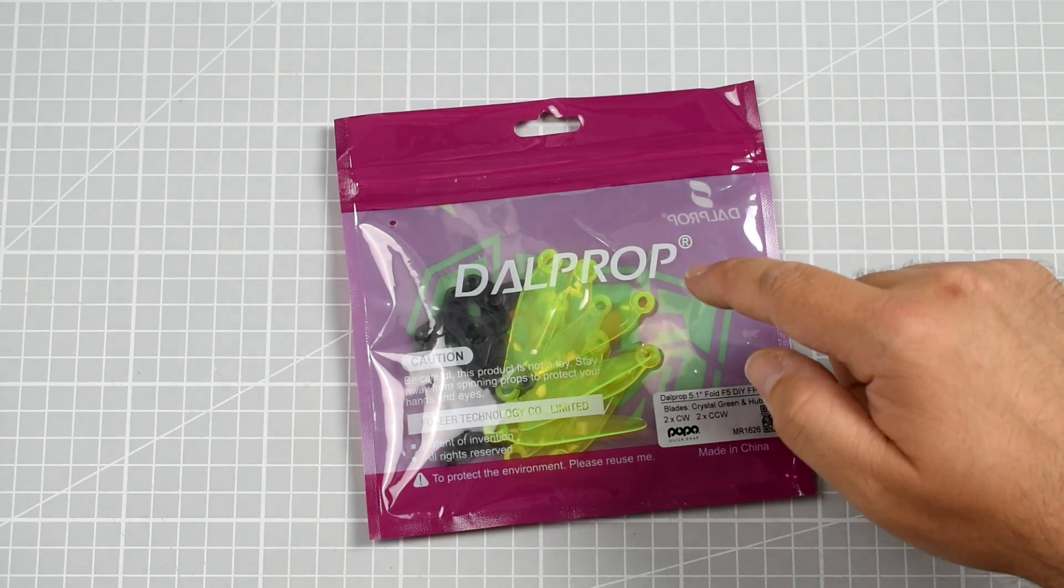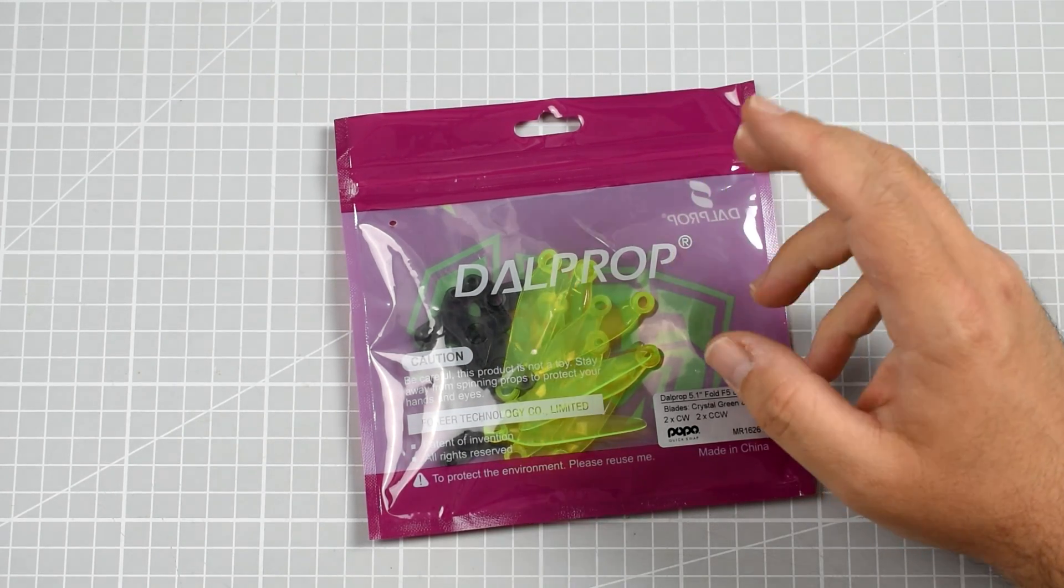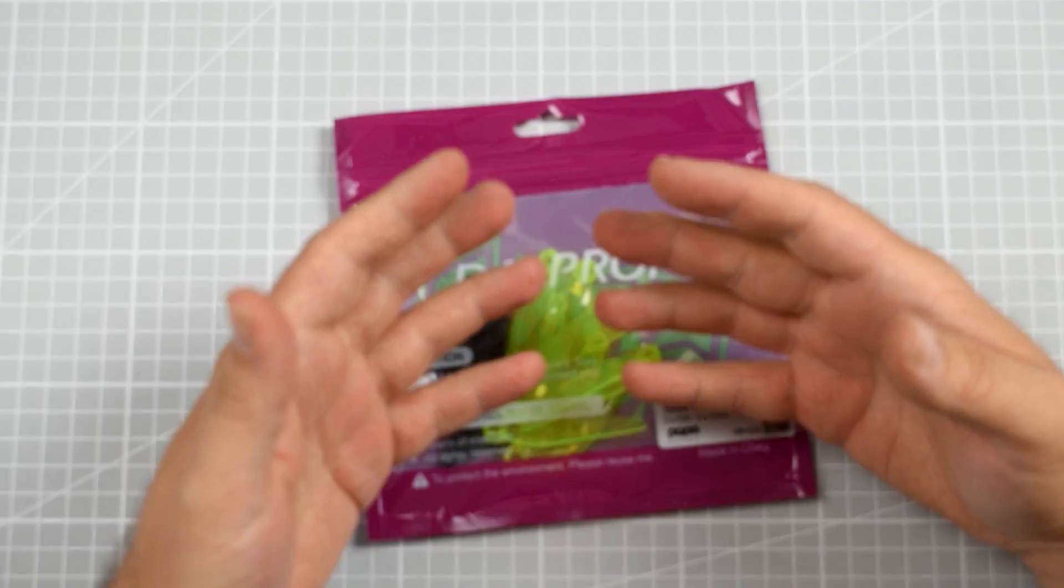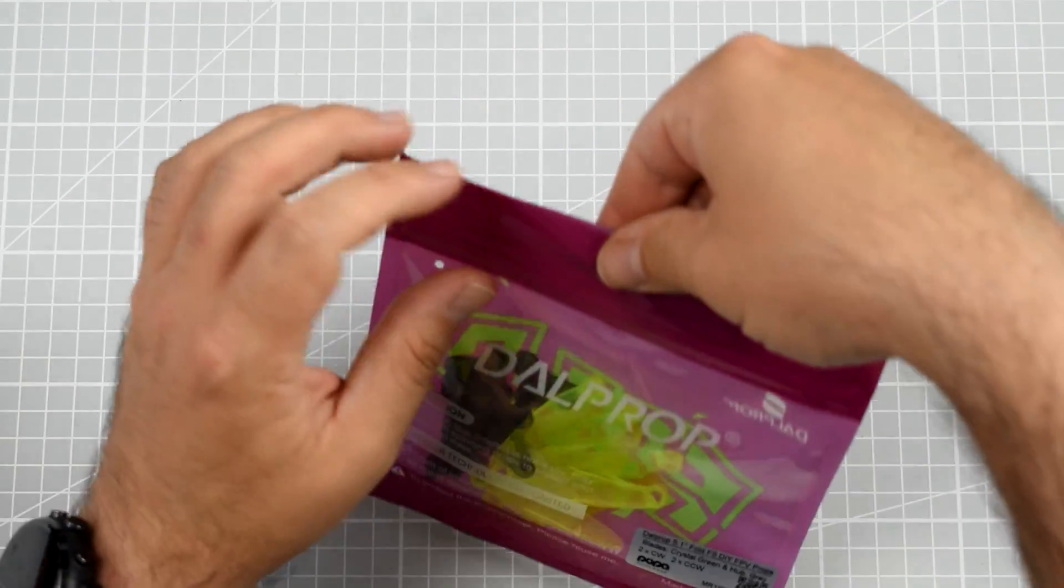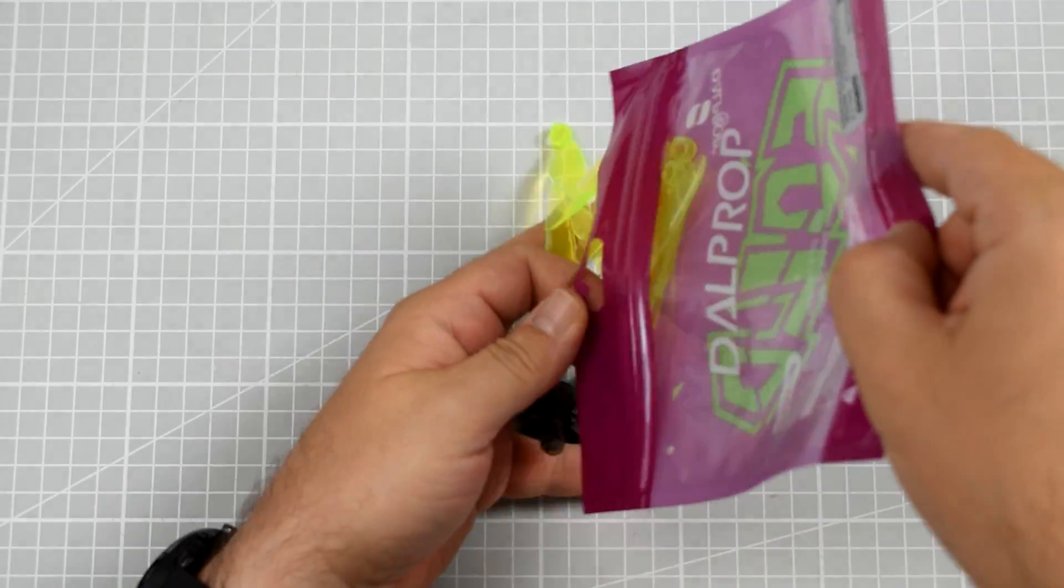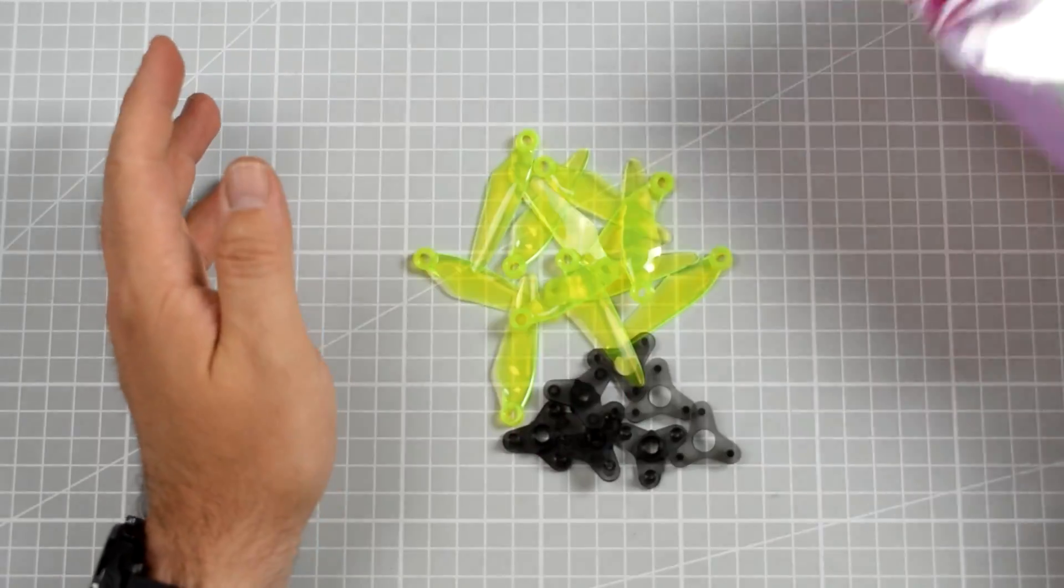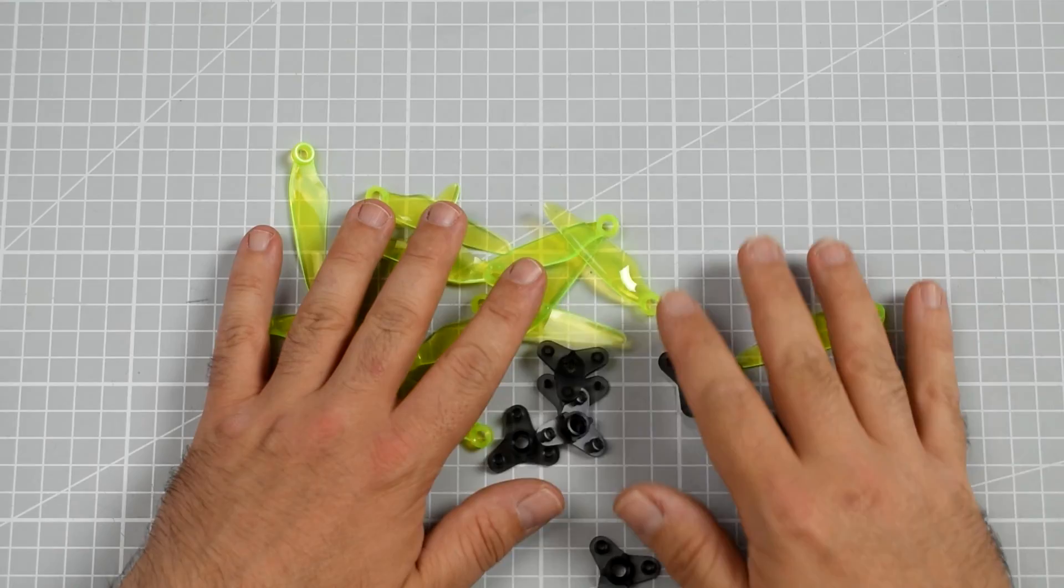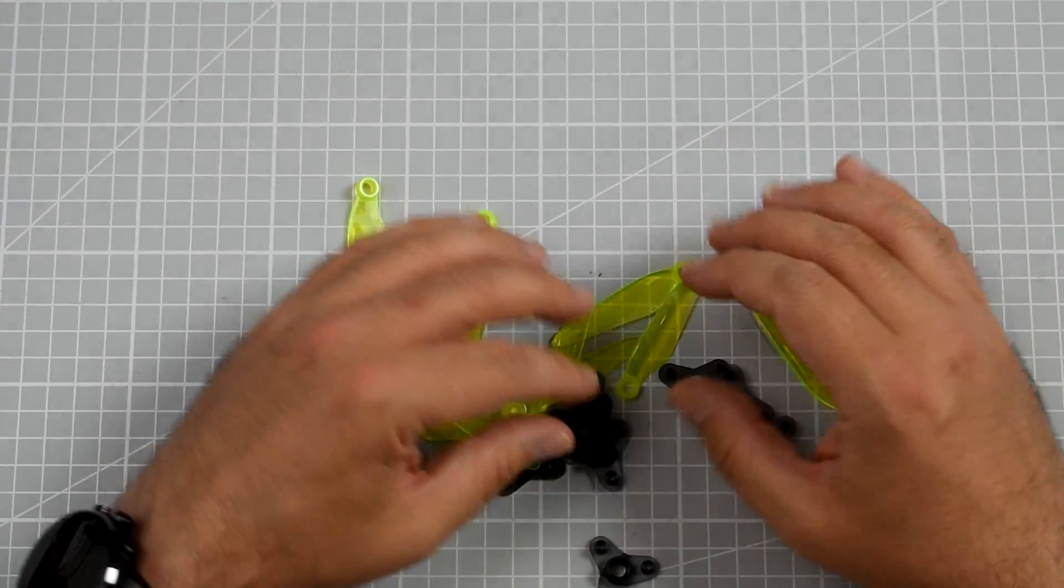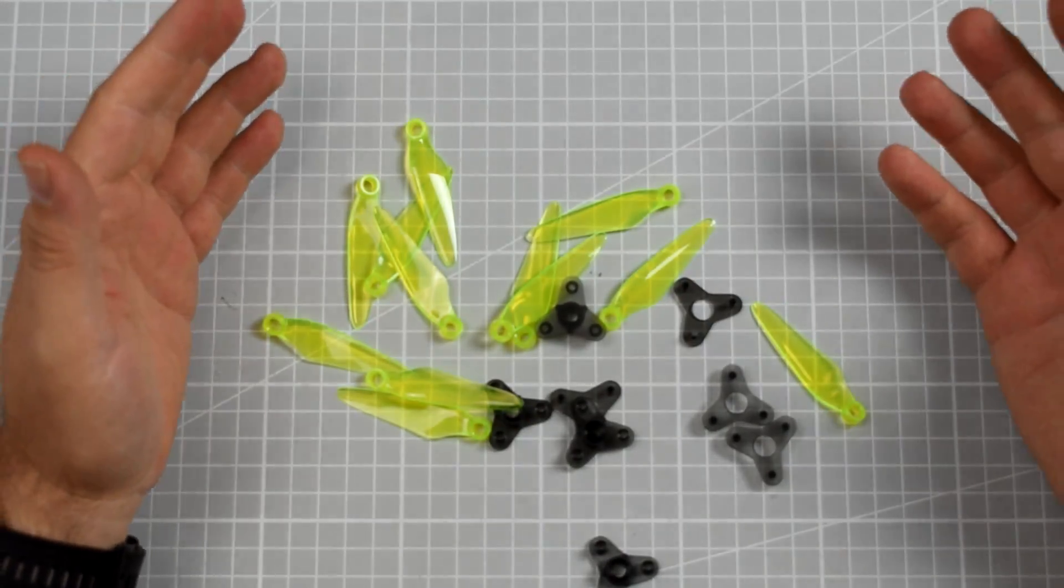If you ordered and received the new Dalprop Fault propellers, you might be wondering why they are not assembled. When you open the bag, the props look like a puzzle.